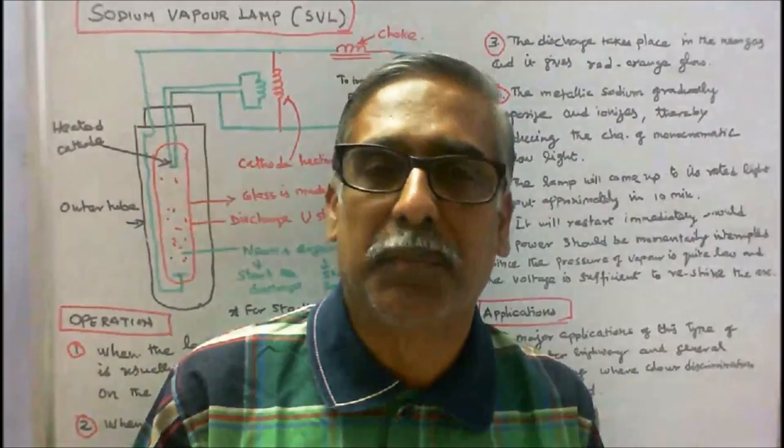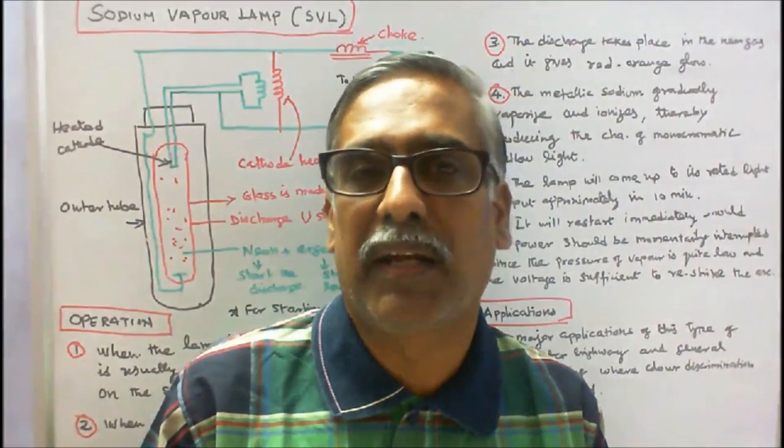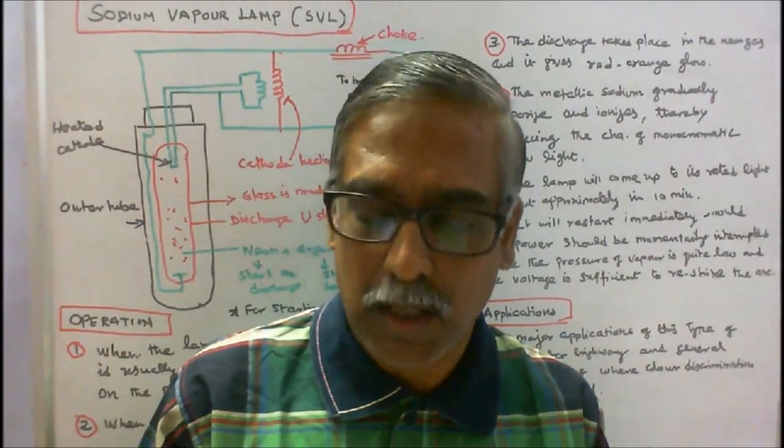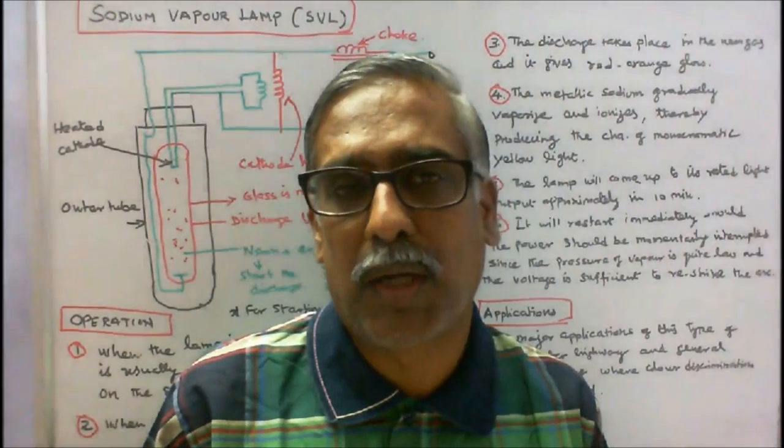Working Principle: Low Pressure Sodium Vapor Lamp works by electric discharge, that means passing electricity through a sodium vapor at low and high pressure.